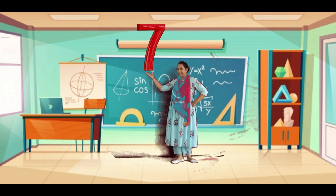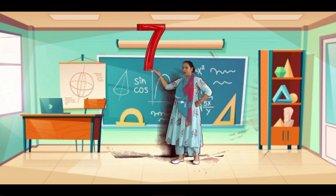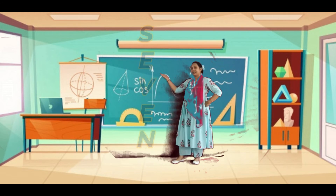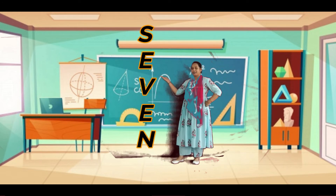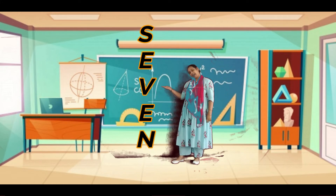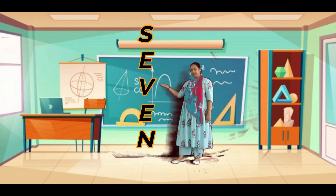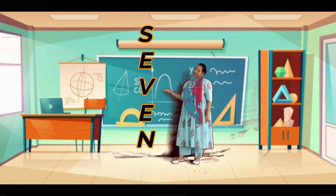Let us learn the number. See children, which number? Seven! Do you know the seven number? Now see the seven spelling: S, E, V, E, N. Seven.